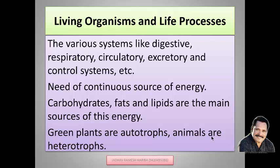We need energy for the various systems, so we eat various foodstuffs to obtain energy. From those foodstuffs, we obtain carbohydrates, fats, and lipids, which are the main sources of energy. Minerals and vitamins are also essential for the functioning of the various life processes in our body.